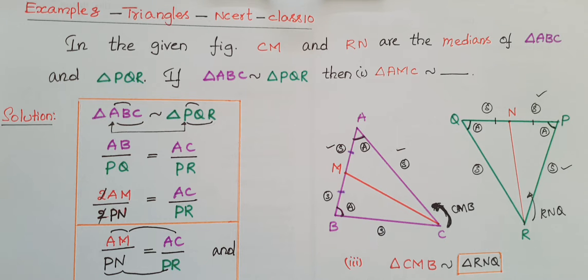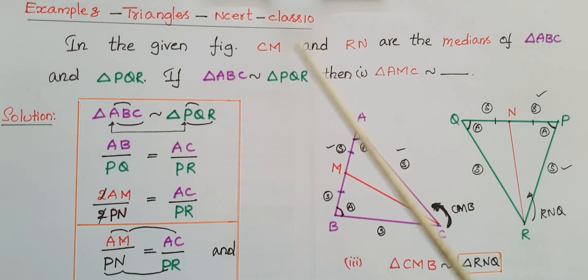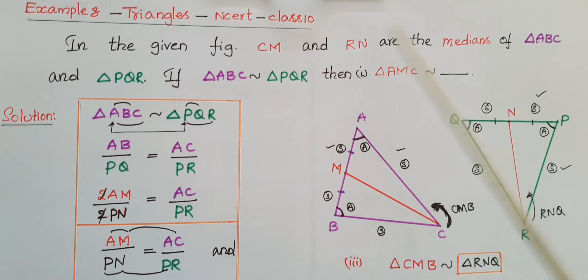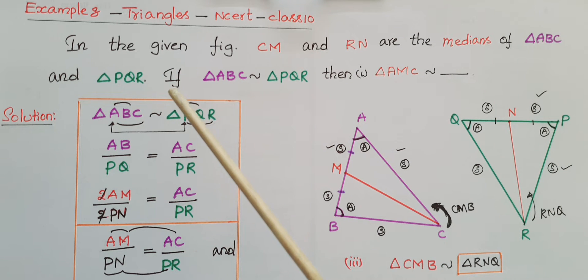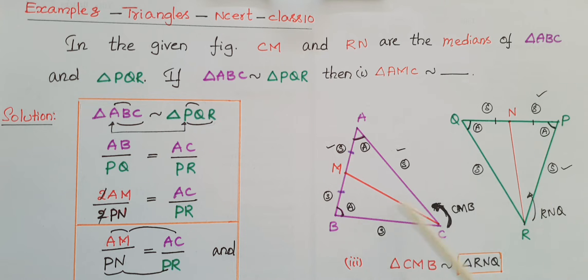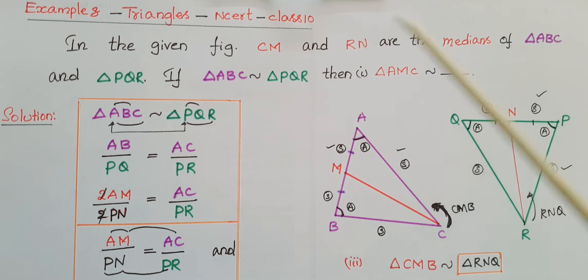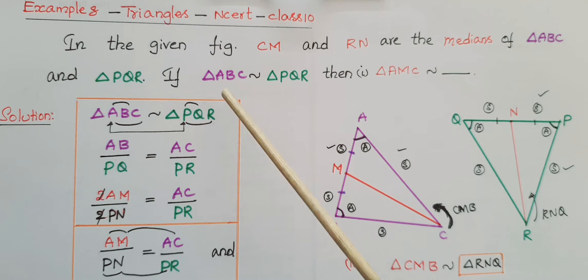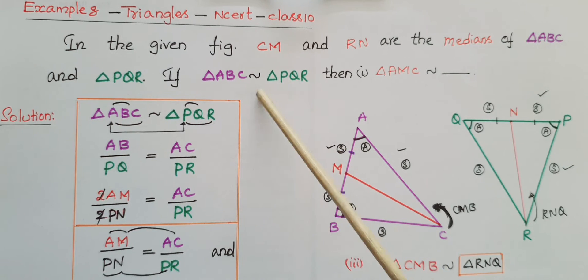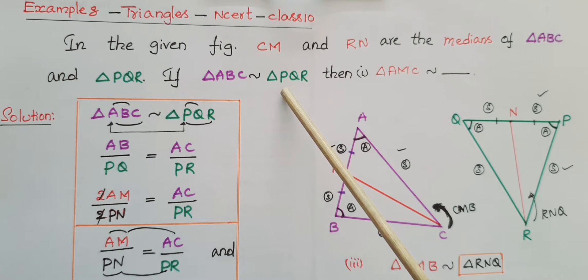Hello everyone, today I am going to tell the solution of Example 8 from the triangles chapter from NCERT Class 10, if this problem comes in the form of MCQ. In the given figure, CM and RN are the medians of triangle ABC and triangle PQR. These two triangles are similar — triangle ABC is similar to triangle PQR.